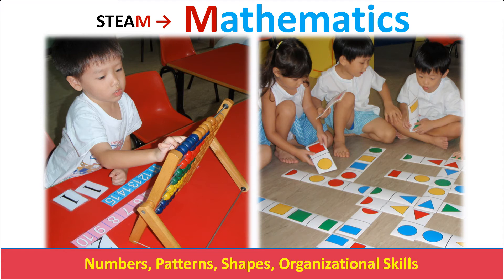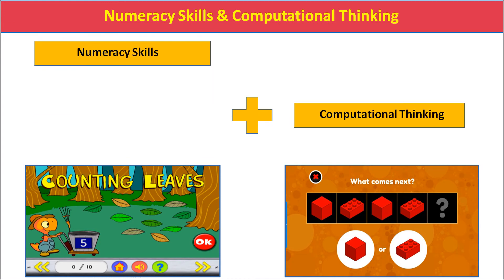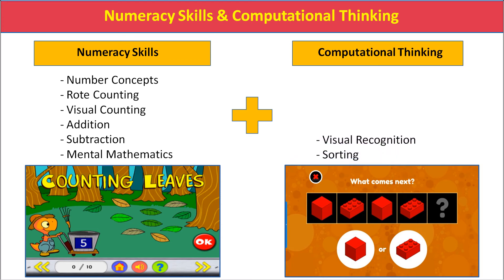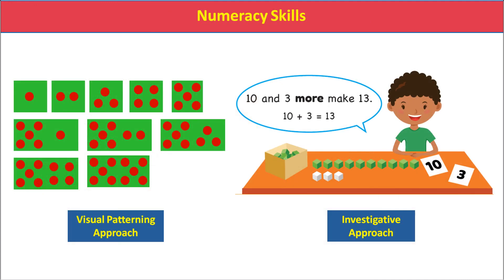Mathematics is a key component of STEAM. The Town for Kids curriculum is designed based on hands-on approaches in the learning of mathematical concepts. Children learn about numbers, patterns, shapes, and organizational skills. The mathematics curriculum covers numeracy skills and computational thinking — including number concepts, rote counting, visual counting, addition, subtraction, and fundamental skills in mental mathematics. In computational thinking, the syllabus covers visual recognition, sorting, grouping, patterning, sequencing, ordering, and association.